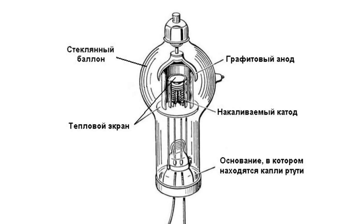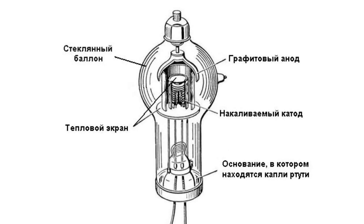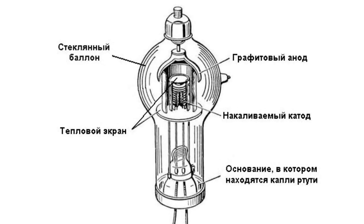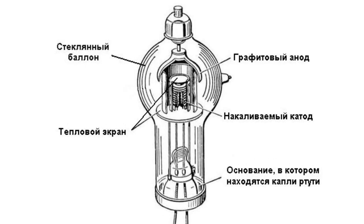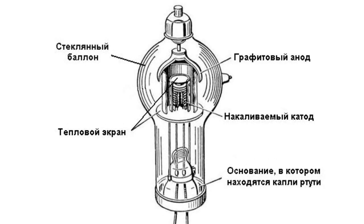The cathode is usually placed into a metal heat shield to ease the thermal operation mode. Anodes are made of nickel or graphite. In some high voltage gas diodes there is also an auxiliary electrode located next to the anode to decrease the ignition potential.